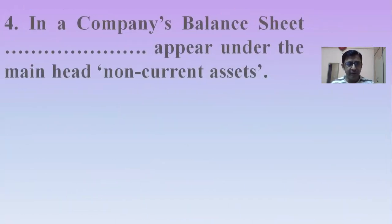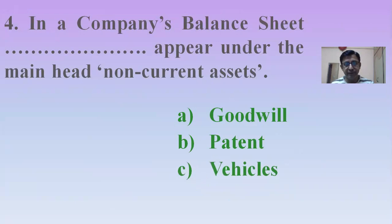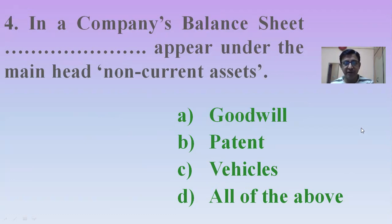Next MCQ: In a company's balance sheet, which items appear under the main head called Non-current assets? Options: Goodwill, Patent, Vehicles, or All of the above. Under Non-current assets, the first head is Fixed assets, which has two subheads — Tangible assets and Intangible assets. Goodwill and Patents are Intangible assets while Vehicles are Tangible assets. So the right answer is Option D — All of the above.